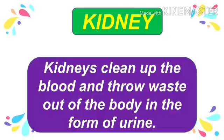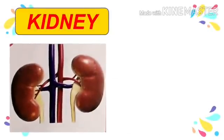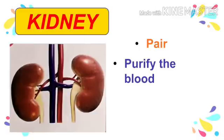Next is the kidney. Kidneys clean up the blood and remove waste from the blood in the form of urine. See the picture of a kidney — they come in pairs, which means we have two kidneys in our body. Kidneys help us in the purification of the blood.